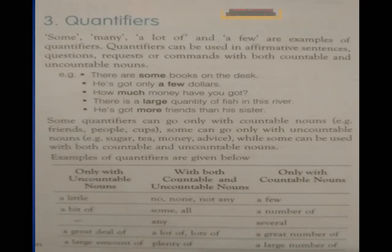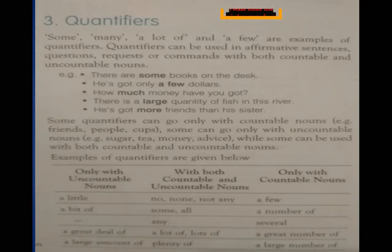For example: 'He has got only a few dollars' — here 'dollars' is a countable noun. 'How much money have you got?' — here 'much' is used for money, which is uncountable. That is the quantity being expressed. Quantifiers give the counting or quantity in front of the noun.